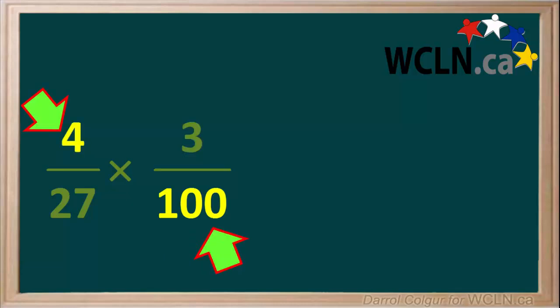When we look at 4 and 100, we realize that both of these can be divided by 4. So we'll cancel each of these numbers out and divide each of them by 4. 4 divided by 4 is equal to 1, so we'll write a 1 here. And 100 divided by 4 is equal to 25, so we'll write a 25 down here.